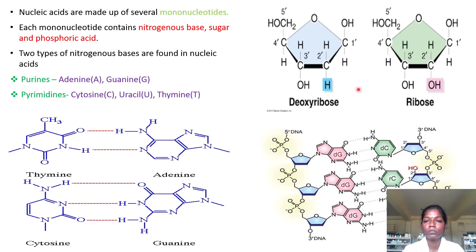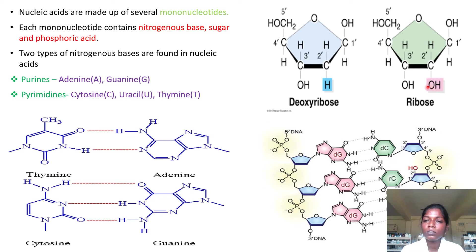Now we will see the sugars of nucleic acids. The nucleic acid contains a five-carbon sugar with positions labeled first through fifth. This five-carbon sugar is a pentose sugar and consists of two types: ribose sugar and deoxyribose. Ribose sugar contains a hydroxyl group at the second position. Deoxyribose contains only a hydrogen group at the second position because it lacks oxygen — that is why it is named deoxyribose. Deoxyribose sugar is present in DNA, while ribose sugar is present in RNA.